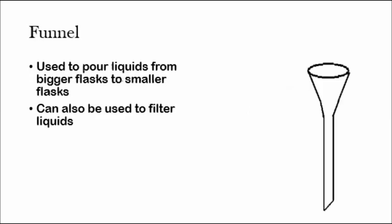A funnel. Funnels are used to pour liquids from bigger flasks to smaller flasks. They can also be used to filter liquids. So let's say you have, I think we talked about this in our separation techniques, you just put a filter paper within the funnel and then you'd pour your liquid down the funnel, and the filter paper would actually filter out all the things that you don't want, like the solids, leaving just the liquid.